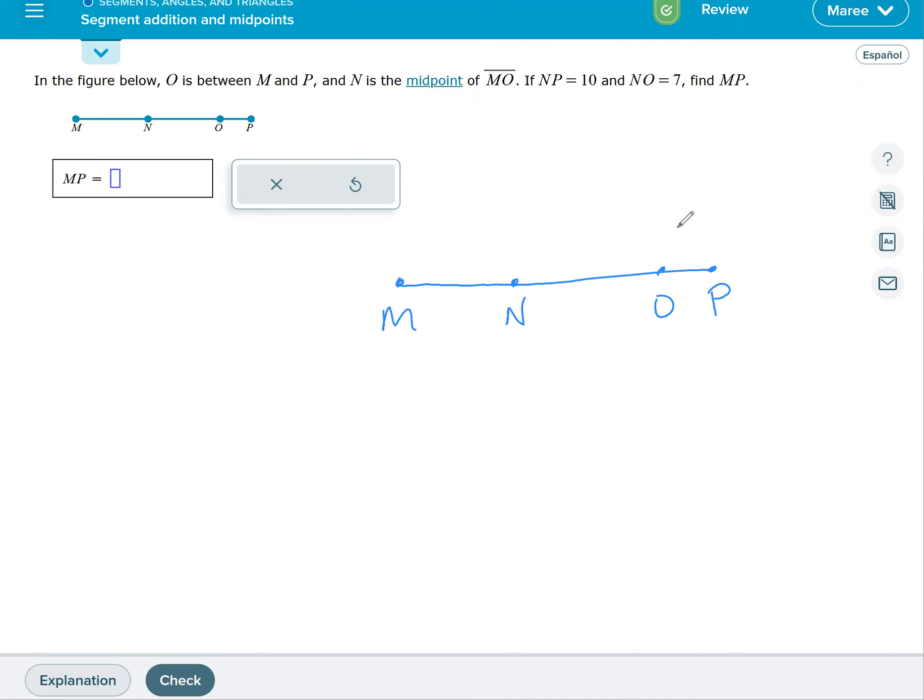And then you also have to realize that by definition, a midpoint means that it's exactly in the middle. So then I label everything they give me, everything they tell me. So they say N is the midpoint of MO. So N is supposed to be in the midpoint, which means I kind of want to move it over a little bit. That looks better.